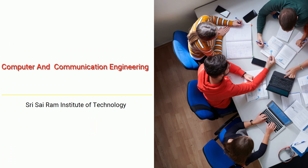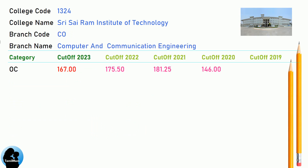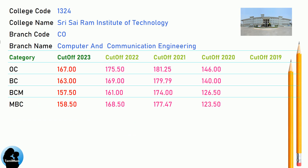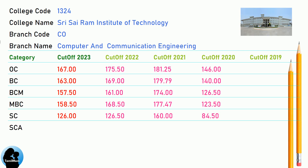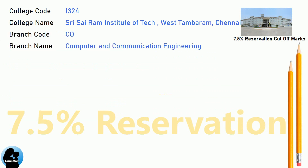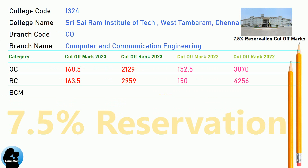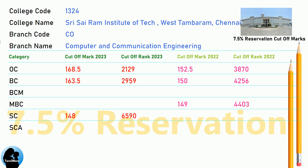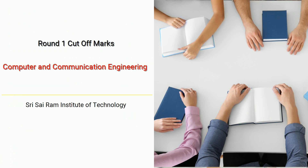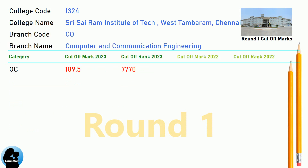DNA Cut-Off for Shri Sai Ram Institute of Technology in Computer and Communication Engineering. DNA 7.5 Reservation Cut-Off for Shri Sai Ram Institute of Technology in Computer and Communication Engineering. DNA Round 1 Cut-Off for Shri Sai Ram Institute of Technology in Computer and Communication Engineering.